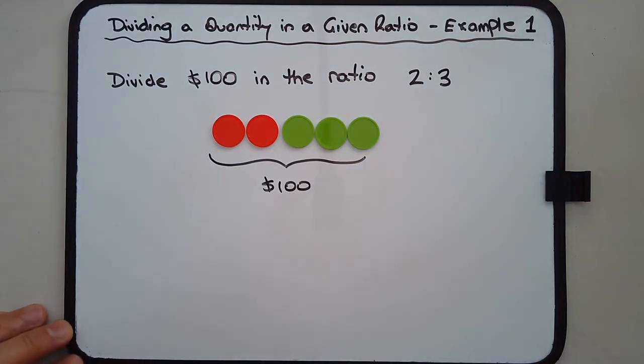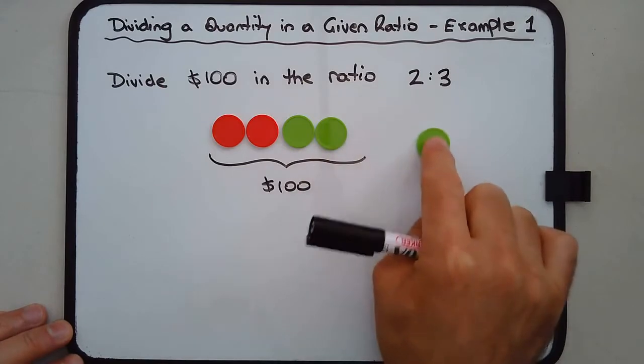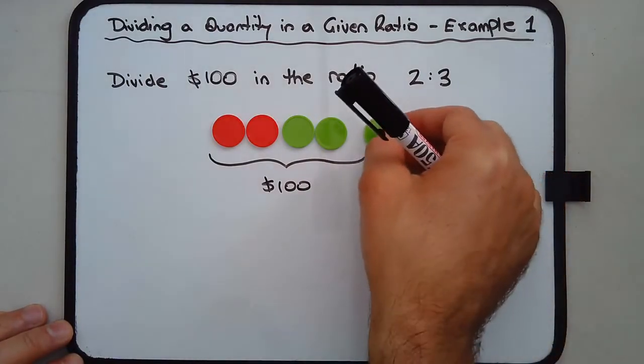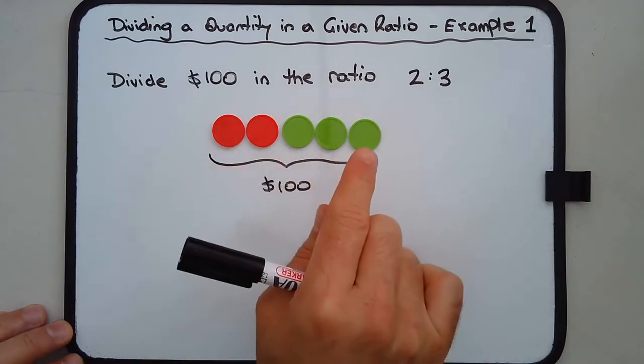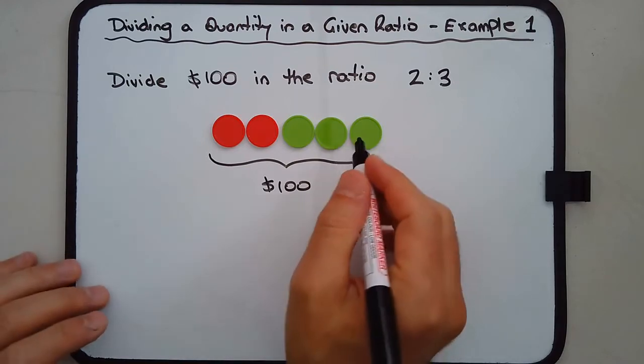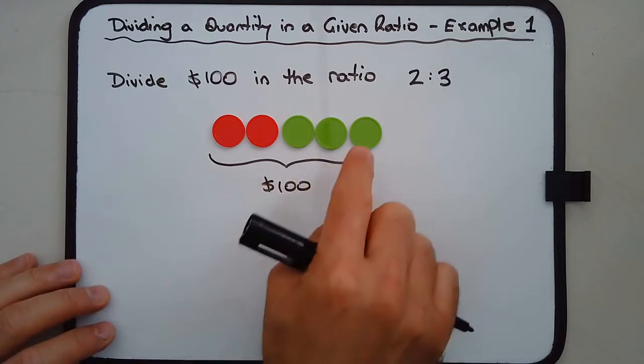So the question is, what is the value of one of these parts? One of these counters, how much money does this counter represent? The colour of the counter doesn't matter. Each counter is considered equal to the other in terms of its value. So what is the value of one of these counters?